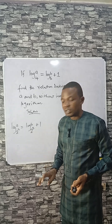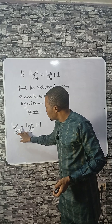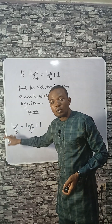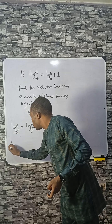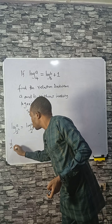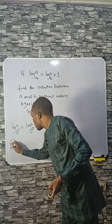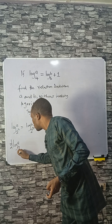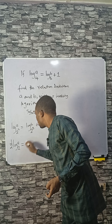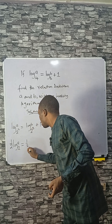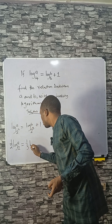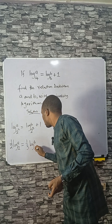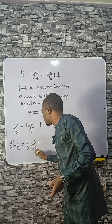One of the laws says you can take the power of the base to this side — it will become 1 over that power. So we get (1/2) log A base 2 equals (1/3) log B base 2 plus 1.